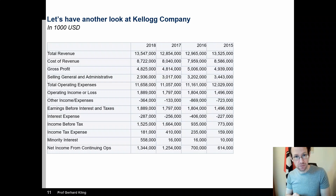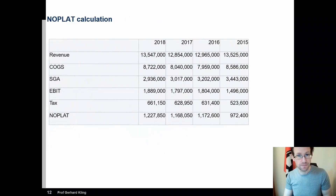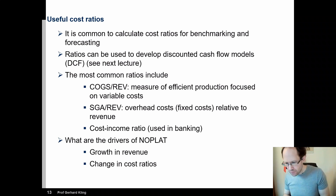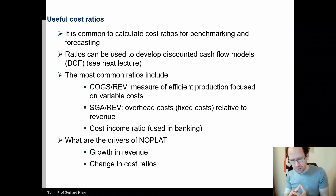Later we will do an exercise based on data from the Kellogg Company, where we try to derive NOPLAT based on the discussion we just had. In addition, we also look at cost ratios, which we covered already in the first unit. This is quite important for analyzing the different components of NOPLAT.